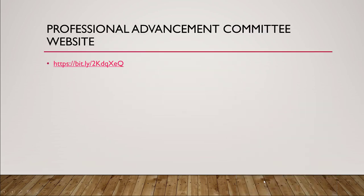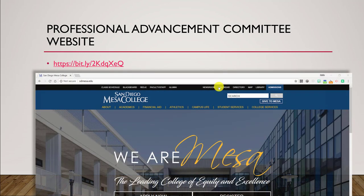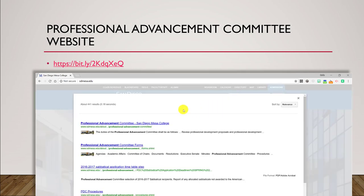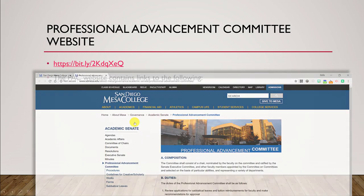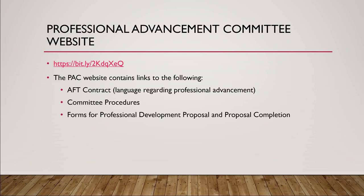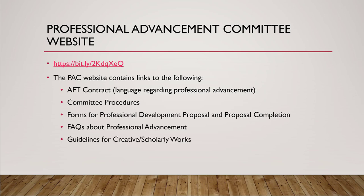To get to the professional advancement website, here is a condensed URL. You can also go to the Mesa College homepage and type in professional advancement in the search engine. The PAC website contains links to the AFT contract language regarding professional advancement, committee procedures, forms for professional development proposals and proposal completion, FAQs about professional advancement, guidelines for creative and scholarly works, as well as sabbatical information and committee meeting dates.